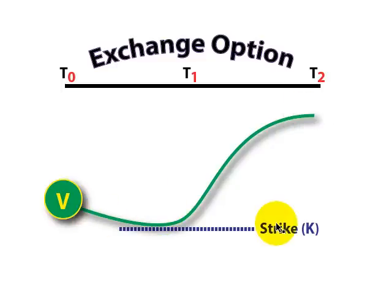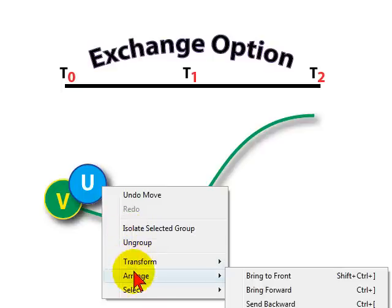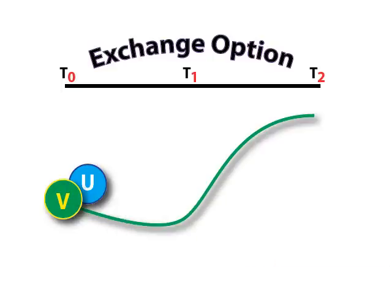what we have instead is another asset. So now when we purchase or are granted the exchange option, what we have is the right to exchange option U and get back option V. Or if you like, we're going to pay U as the strike price and get back V, the underlying asset.